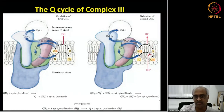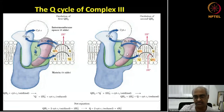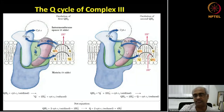In the second cycle, one more molecule of fully reduced ubiquinol binds. From there, through the iron-sulfur protein, one electron goes to cytochrome C, just like the first cycle, and the other via cytochrome B and the two heme groups returns to reduce the semiquinone produced in the first cycle back to fully reduced ubiquinol.